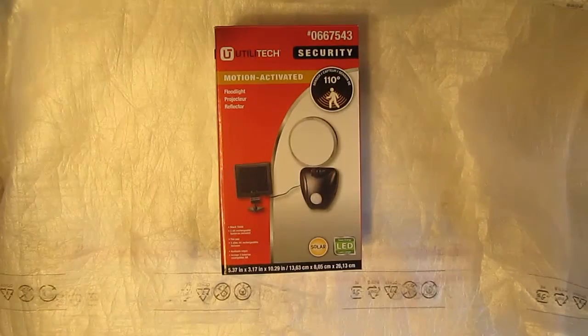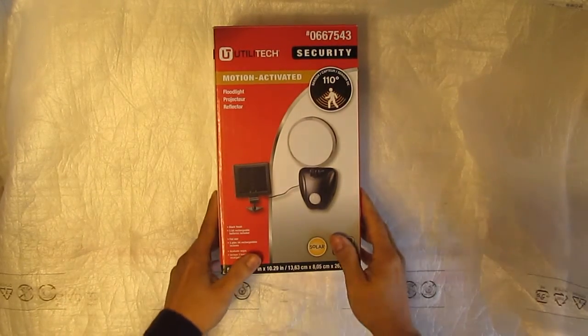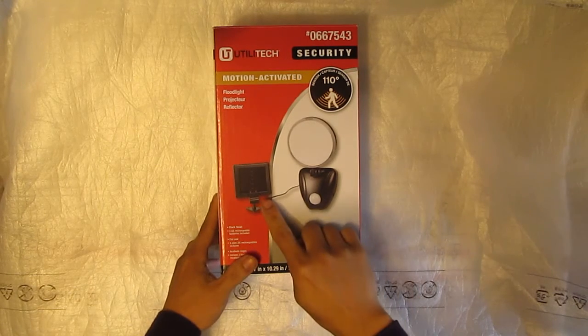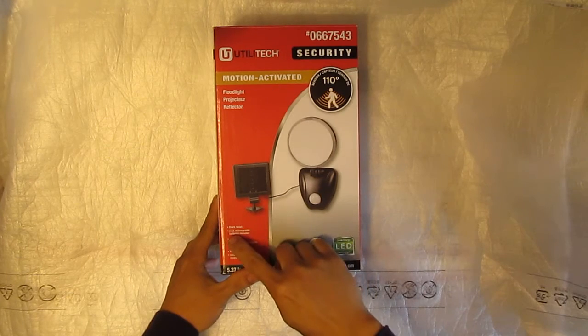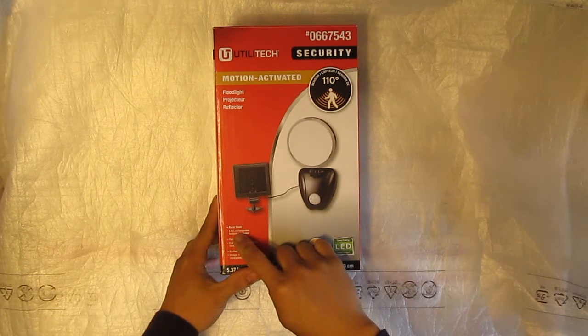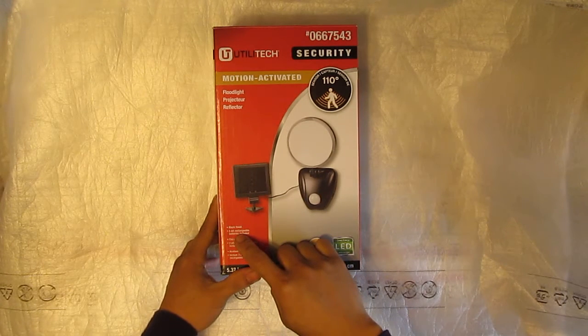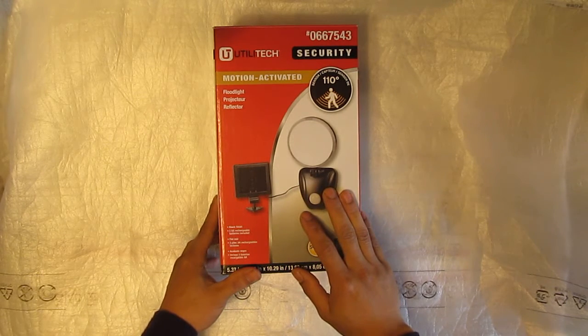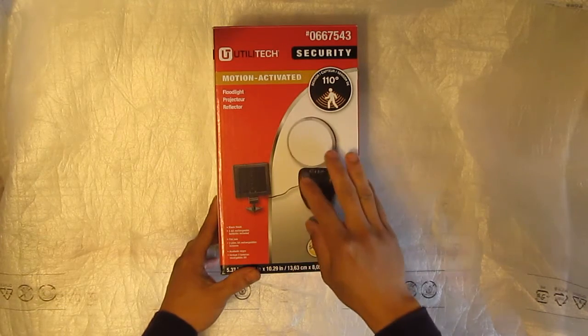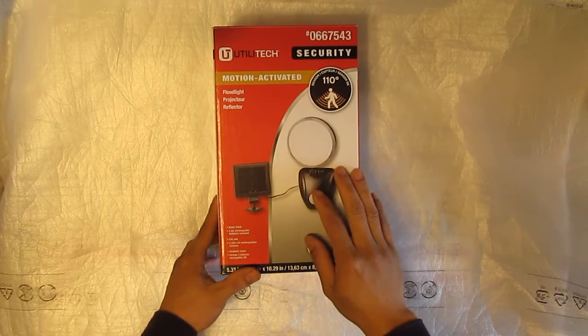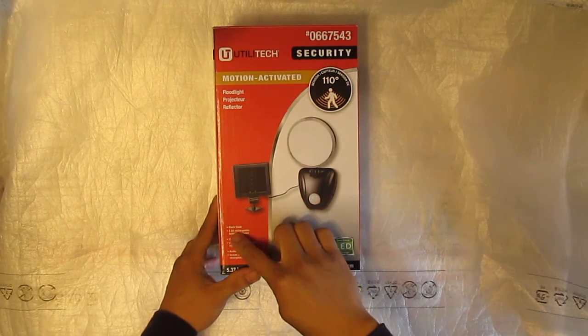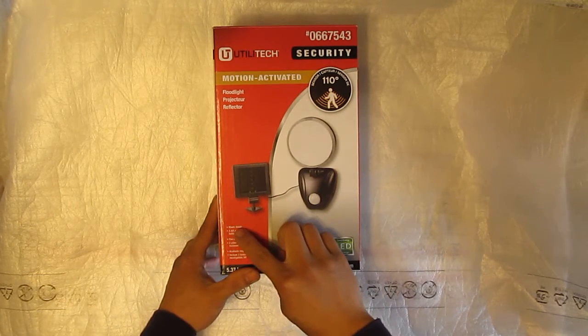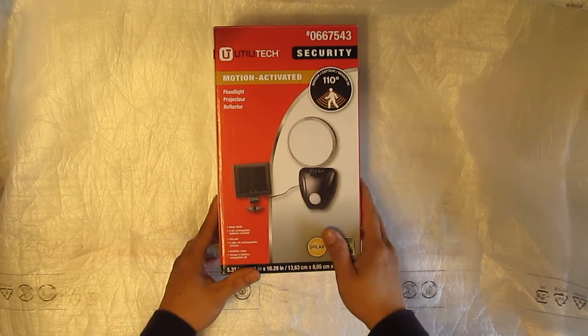Right, today I'm going to talk about this Utilitec motion-activated floodlight. It is solar powered and runs on three AA rechargeable nickel metal hydride batteries. I'm going to show you a different way to power this light without using these three AA rechargeable batteries, because these are expensive. I'll show you another way to power it for free, and it's even more powerful.